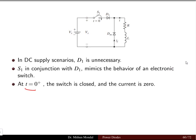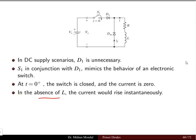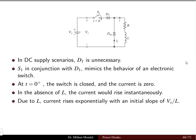At time t equal to zero-plus, the switch is closed and the current is zero, because just after the switch is closed there will be no current in the circuit. In the absence of an inductor the current would rise instantaneously — if there is no inductor and the switch is closed, the current starts flowing at a very fast rate. Due to the inductor, the current rises exponentially with an initial slope of Vs/L. This was covered during the discussion of the RL load with a diode in the absence of the freewheeling diode.